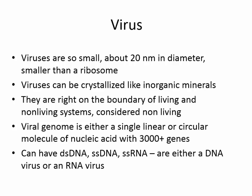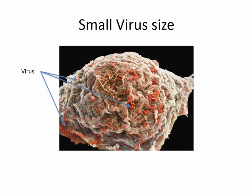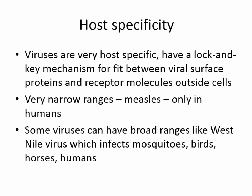The viral genome is either a single linear or circular molecule of nucleic acid with about 3,000 genes — not many. We can have double-stranded DNA viruses, single-stranded DNA viruses, and single-stranded RNA viruses, so a virus can be either a DNA virus or an RNA virus. The tiny orange dots in the image are viruses sitting on top of a cell — an amazingly small particle.